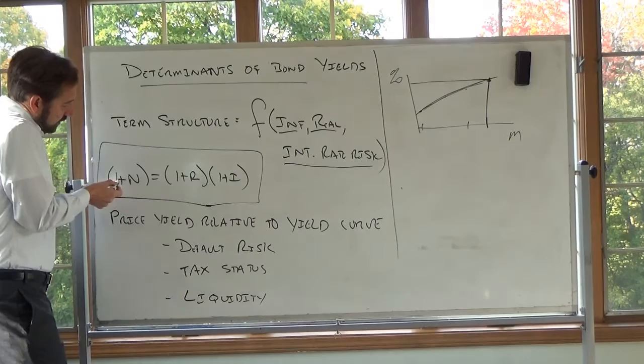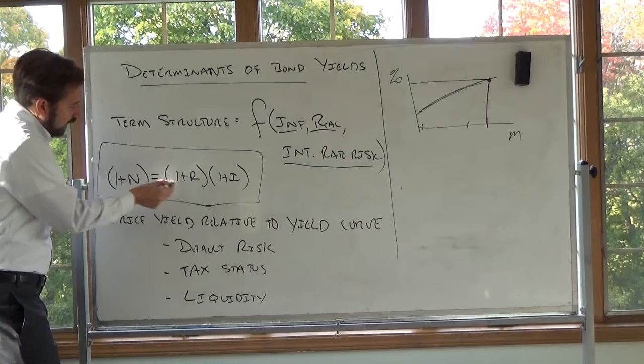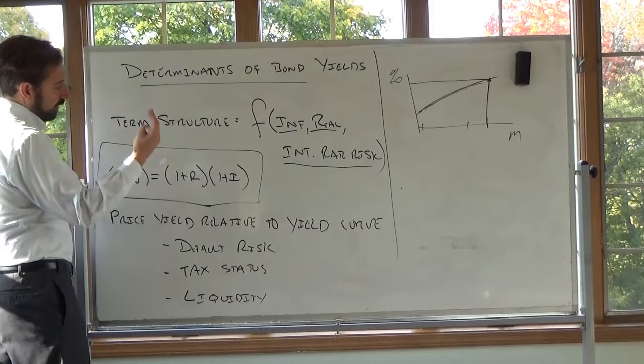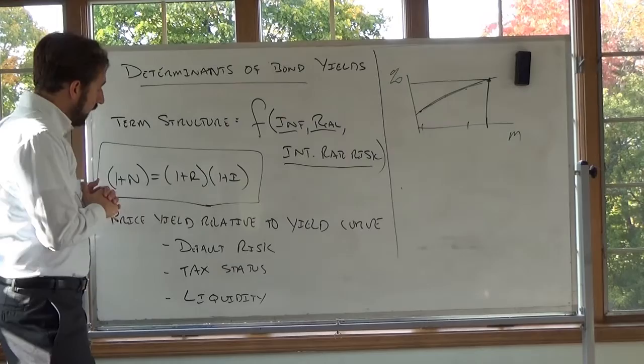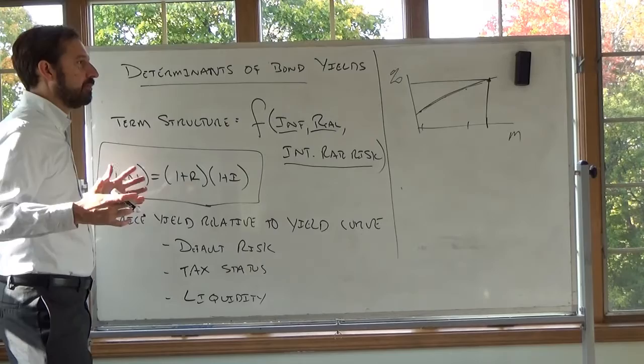We have this relationship formalized in the Fisher effect: the nominal rate equals one plus the real rate times one plus inflation. So you can see: if the real rate goes up, the nominal rate — the rate on the two-year note — goes up. If inflation expectations go up, the rate on the two-year note goes up. This gives us a formal relationship.